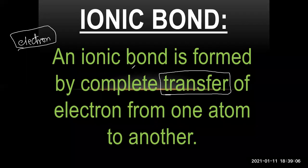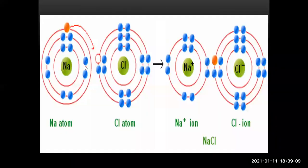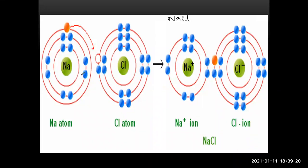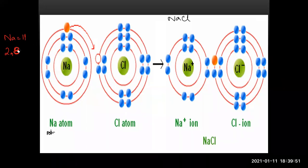Let's see the example of sodium chloride. Sodium and chlorine form a chemical bond. The neutral sodium atom has atomic number 11, so it has 11 electrons: 2 in the first shell, 8 in the second shell, and 1 in the third shell. Chlorine has atomic number 17, so it has 17 electrons: 2 in the first shell, 8 in the second shell, and 7 in the third shell.